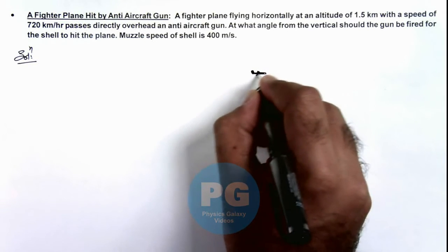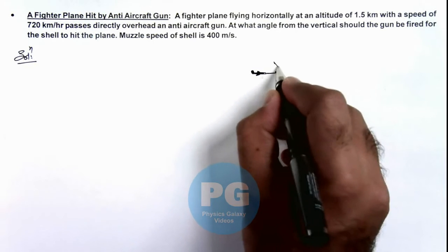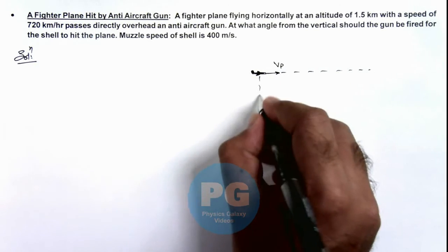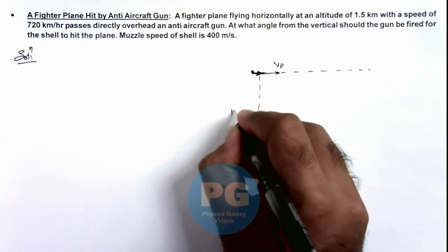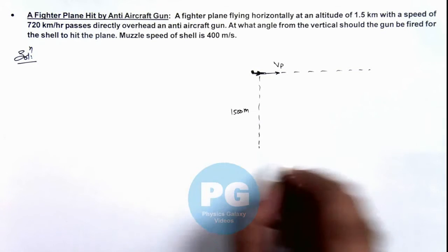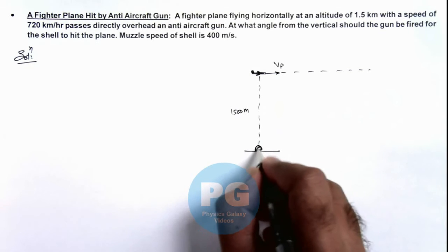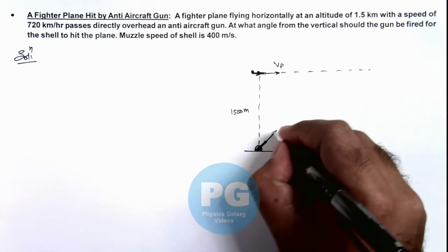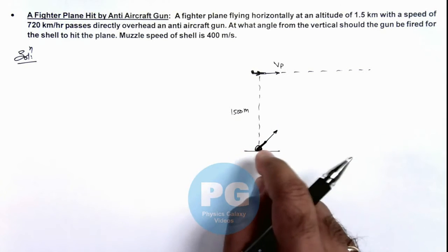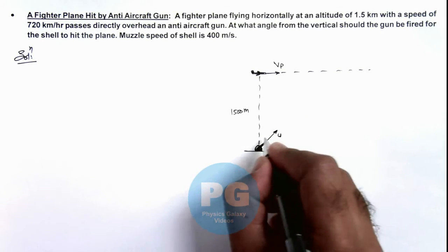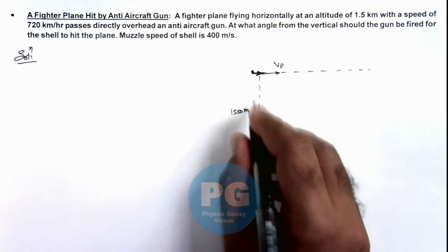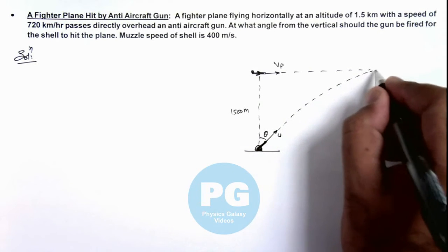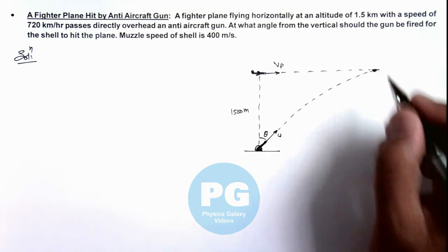Let's draw the diagram. The plane is flying horizontally with a speed vp in a straight line. At a distance of 1500 meters below the plane, on the ground, there is an anti-aircraft gun, which is fired at an initial speed u with an angle of projection theta with respect to the vertical, such that by following a projectile path, the shot will hit the plane at some point.